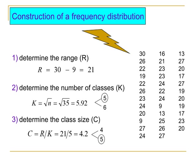Referring to the example at the right side, the highest observable value is 30, while the lowest observable value is 9. Therefore, R equals 30 minus 9, which equals 21. So the range is equal to 21.